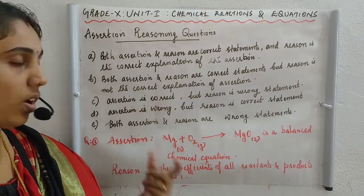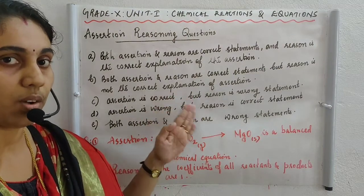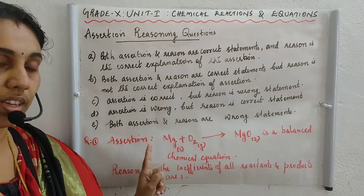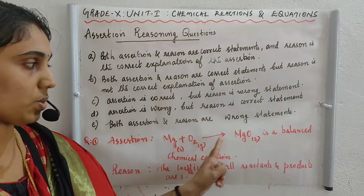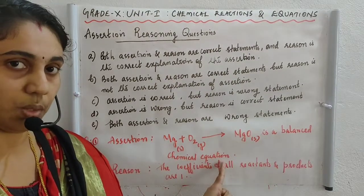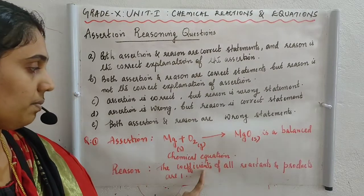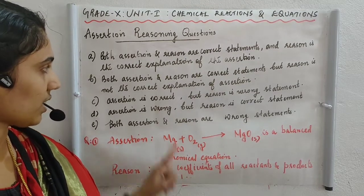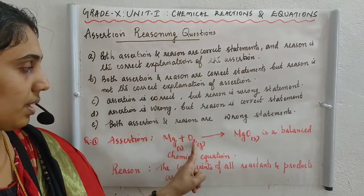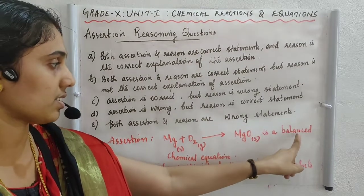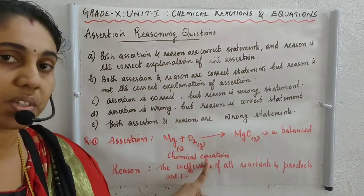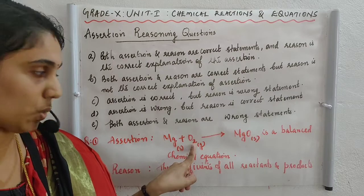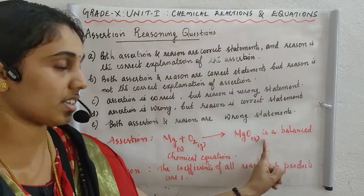Question 1 — Assertion: Mg + O₂ → MgO is a balanced chemical equation. Reason: the coefficients of all reactants and products are 1. We know that Mg + O₂ → MgO is not a balanced chemical equation, because on the left there are 2 oxygen atoms but on the right only 1. So the assertion is wrong.